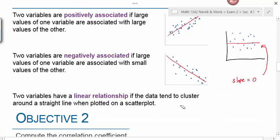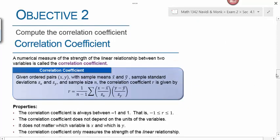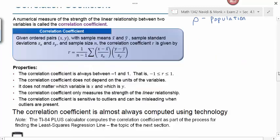Objective two is to compute the correlation coefficient. A correlation coefficient is just a numerical measure of the strength of the linear relationship between two variables. We use r to represent our correlation coefficient for sample data. The Greek letter rho is what we use for population data. Here's the formula for calculating it by hand, but we're not going to use that. We're going to let the calculator do the heavy lifting.